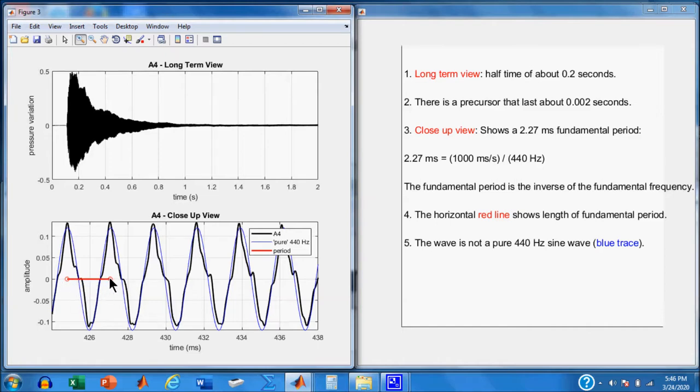This time repeats, and it's about 2.27 milliseconds, which can be back-calculated into 440 hertz, because you take 1,000 milliseconds per second, divide it by 440 hertz, which also has units of 440 per second, and you end up with 2.27 milliseconds. So the fundamental period, which is this red distance here in time, is the inverse of the fundamental frequency.